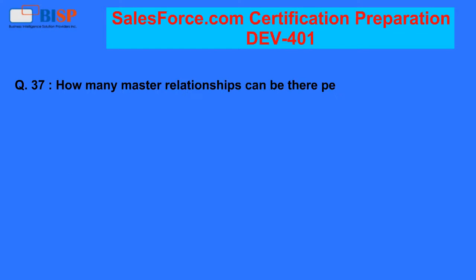Question 37: How many master relationships can there be per detail object? A. 1. B. 2. C. 3. D. 4.